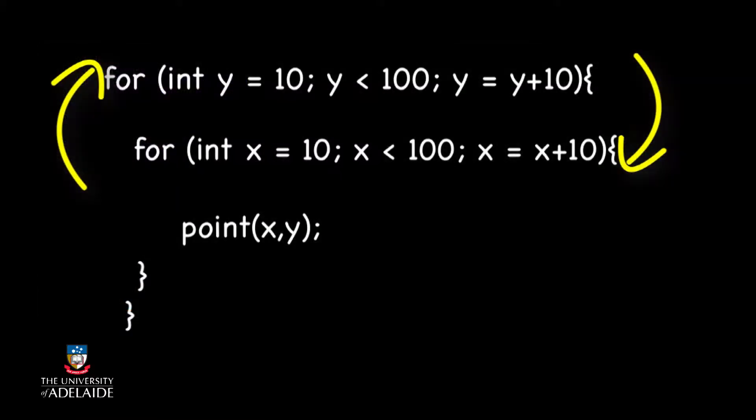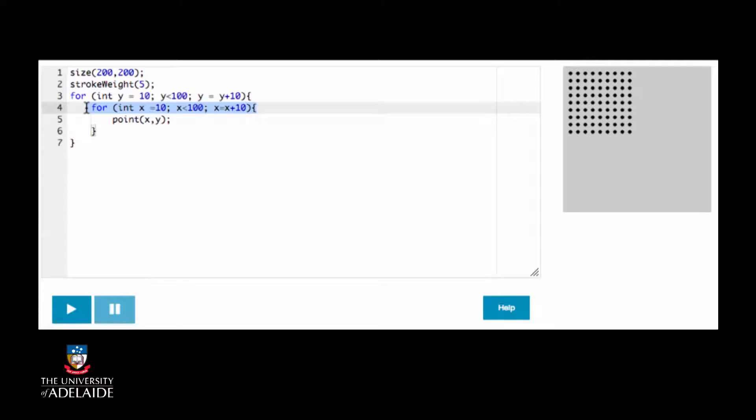What would happen if we switched between the for statements? Let's try it out. That's right, the output is the same because we start in the same position and we increment both the x and the y with the same values. However, this is not always the case, so you will have to be careful with the ordering of the for loops.